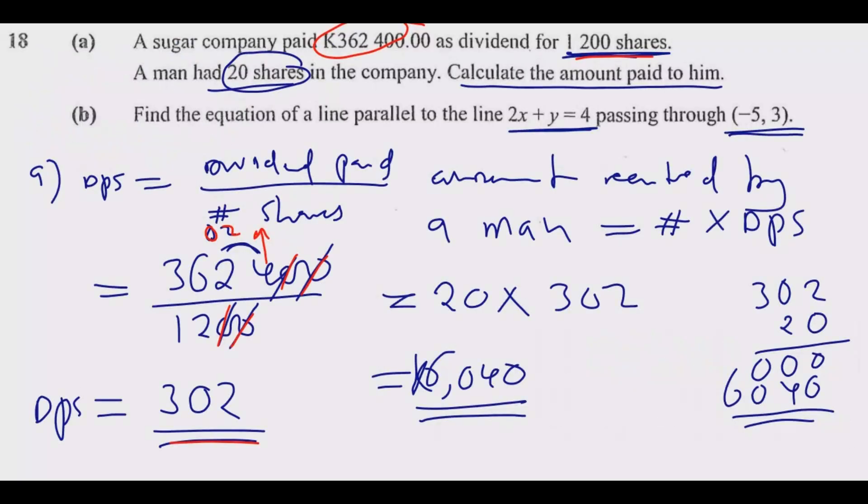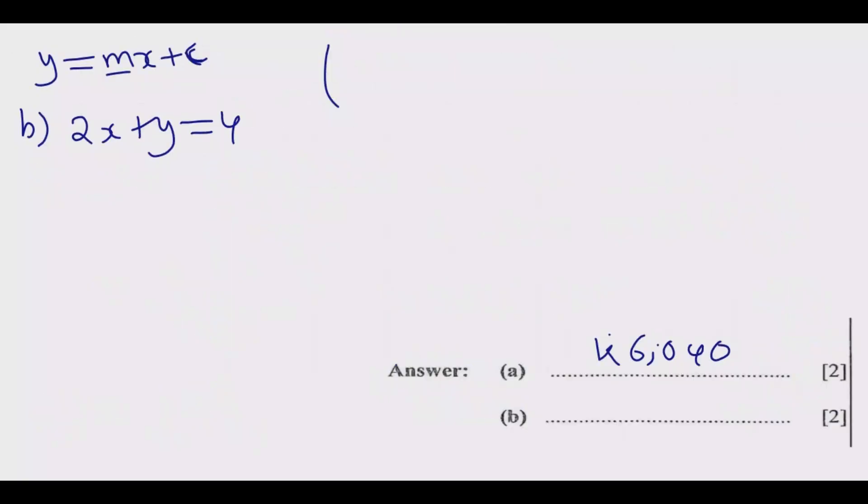The point is (-5, 3). I make y the subject of the formula, so y = -2x + 4. This means the gradient is equal to -2, which is the coefficient of x.